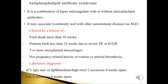Laboratory diagnosis of antiphospholipid syndrome requires: anticardiolipin antibody IgG and/or IgM at medium to high titer on 2 occasions 8 weeks apart, or lupus anticoagulant also on 2 occasions 8 weeks apart. This is a very important diagnostic criterion.